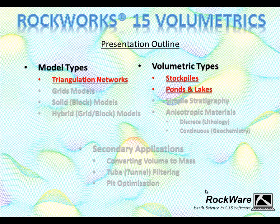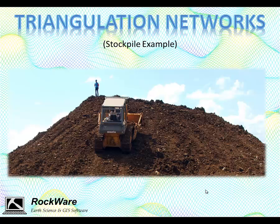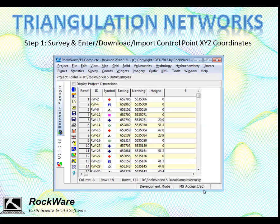The simplest method is triangulation, which is useful for stockpiles, ponds and lakes, surface topography, and stratigraphy. Let's walk through an example whereby we'll be using triangulation to compute the volume of a stockpile. We start with the hard part — specifically surveying the points and entering or importing the data.